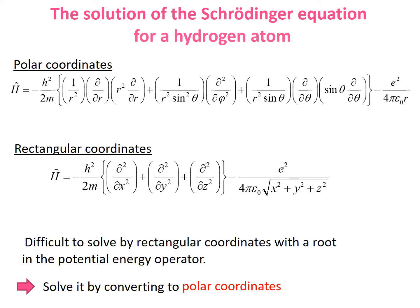The Hamiltonian of the electrons in the hydrogen atom is described like this in polar coordinates. This extended portion here indicates the kinetic energy operator with the polar coordinates r, theta, and phi. Also, the potential energy of the Coulomb force is used here as the potential energy, as we did in the Bohr model.